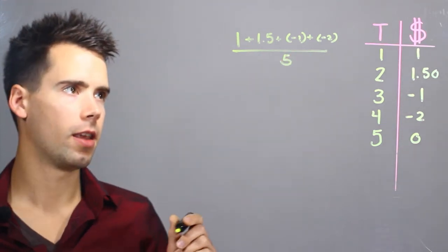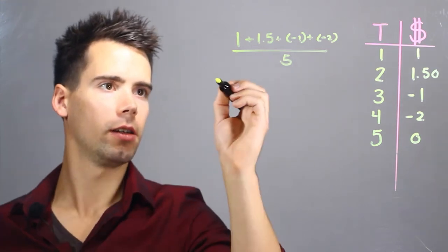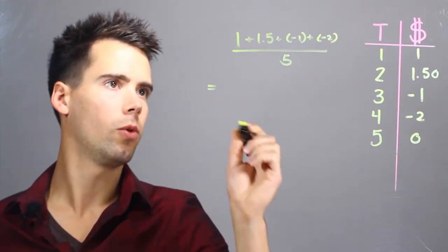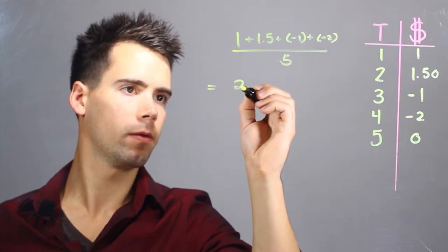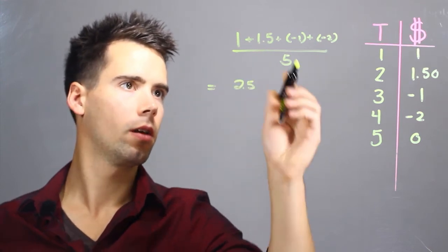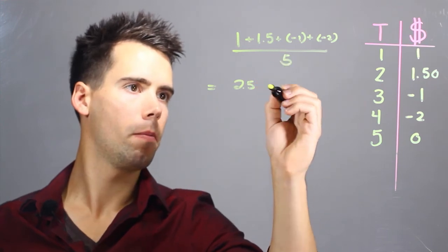And we find that the average dollar amount per transaction is equal to 1 plus 1.5, which is 2.5, minus 1.